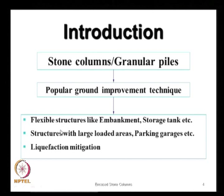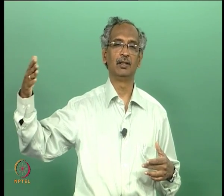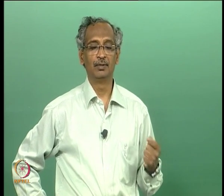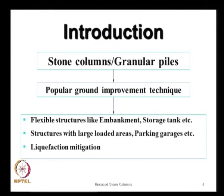We employ stone columns to support flexible structures like embankments or steel oil storage tanks, especially when we have very large areas to support — for example, an approach road leading to a bridge, almost 600–700 meters length and about 25 meters wide. It is not easy to design a rigid concrete pile foundation for such cases, as they become very expensive. Stone columns, being made of highly granular materials, can also be used to mitigate liquefaction potential, because they can drain water pressure very fast and dissipate pore pressures rapidly.